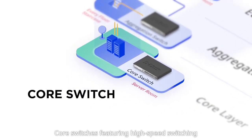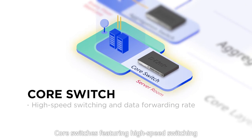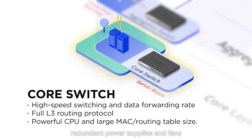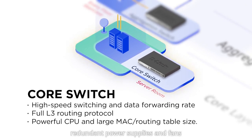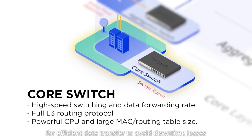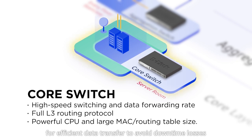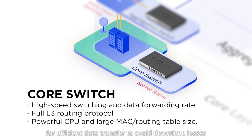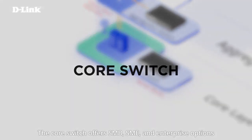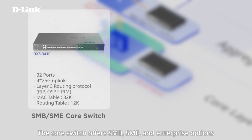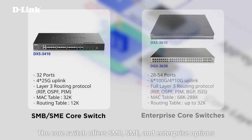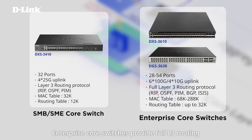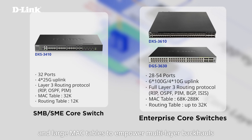Core Switches feature high-speed switching, versatile routing, redundant power supplies, and fans for efficient data transfer to avoid downtime losses. The Core Switch offers SMB, SME, and Enterprise options. Enterprise Core Switches provide full L3 routing and large EMAC tables to empower multi-layer backhauls.